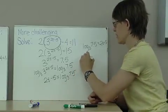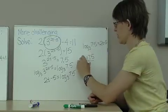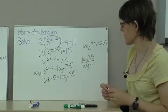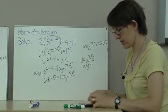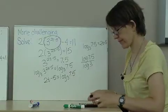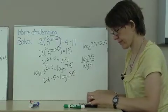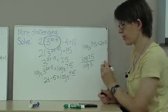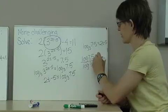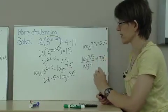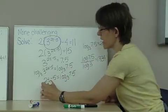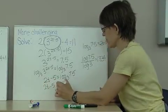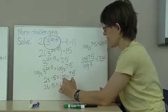again, that's log 7.5 for log 3, and that is 1.83 or 1.834 more precisely. So I have 2t minus 5 equals 1.834,